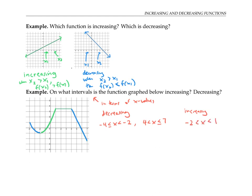I can also describe these intervals in interval notation. So the decreasing part would be [−4, −2) ∪ (4, 7], and the increasing part is (−2, 1).